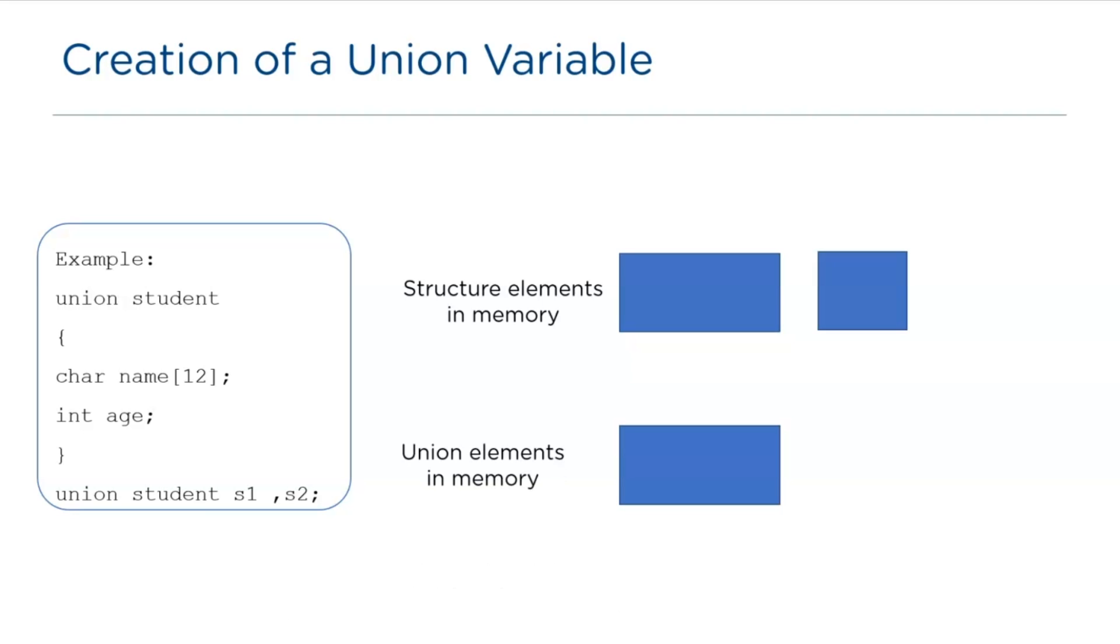In this example, we have members name and age as type char and int respectively. So, with this example, let's understand the difference between structure and union elements in the memory. Once the variable is created, the memory for the members are allocated. In that case, the memory will be allocated for s1.name and s1.age. As we know, the size of a char is 1 byte. So, according to the size of a name, 12 bytes of memory space will be allocated and 2 bytes for age. So, the total memory allocated is 14 bytes.